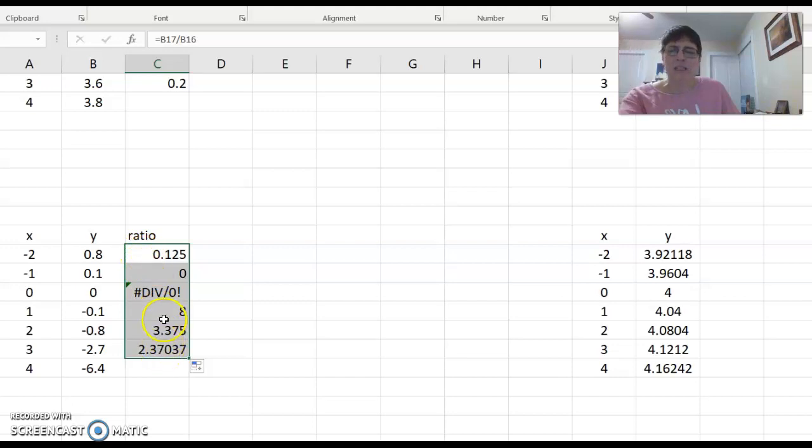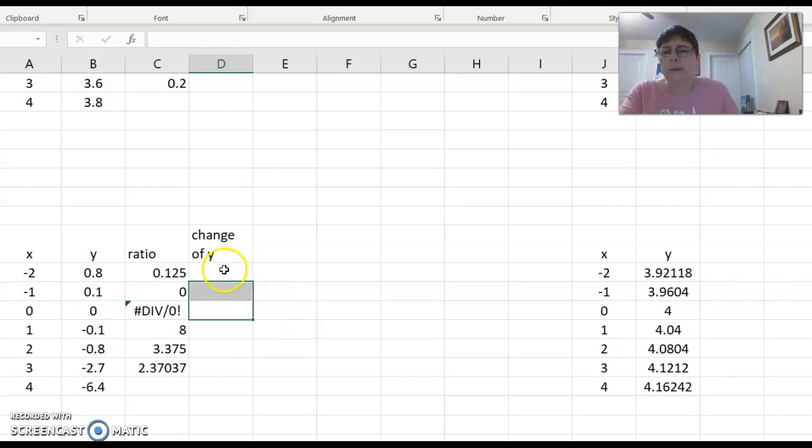It's not coming constant and sure doesn't like that division by zero, does it? So let's try change of y. Equals the bottom one subtract the top one.